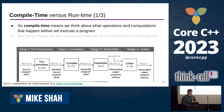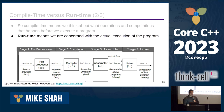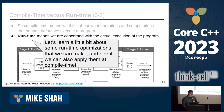Compile time means we're thinking about operations and computations that happen before we execute our program — at the source-code level before we press compile. Runtime means we're concerned with the actual execution of the program — how fast is our linked list running, the overall execution time. We can pay runtime for compile time and vice versa.